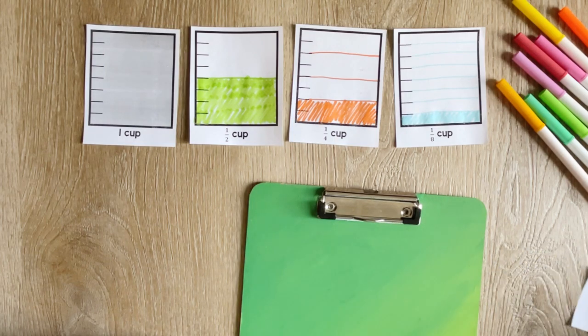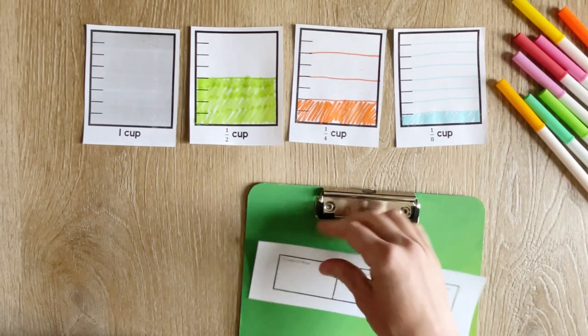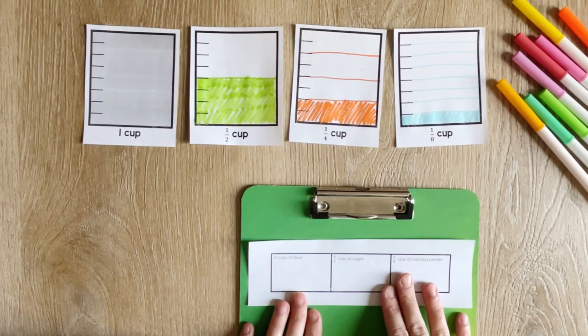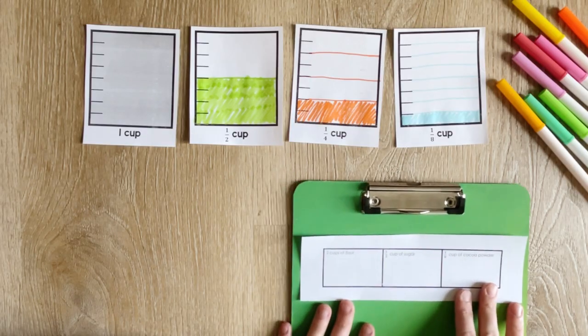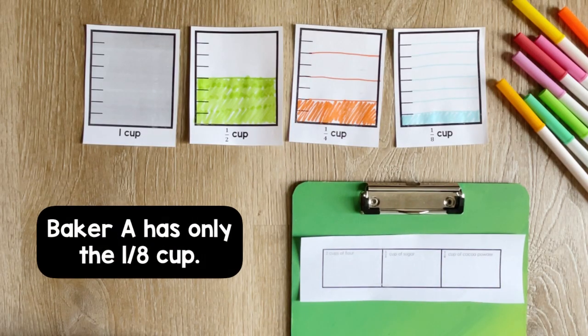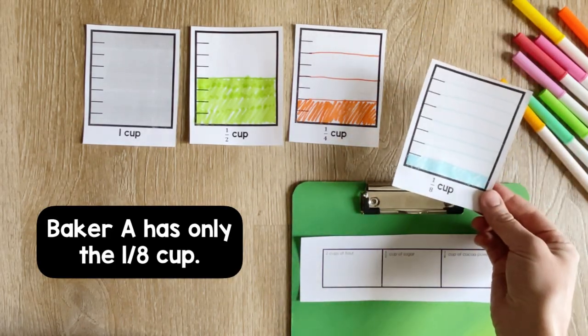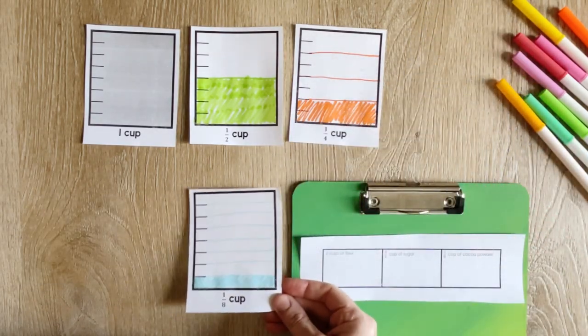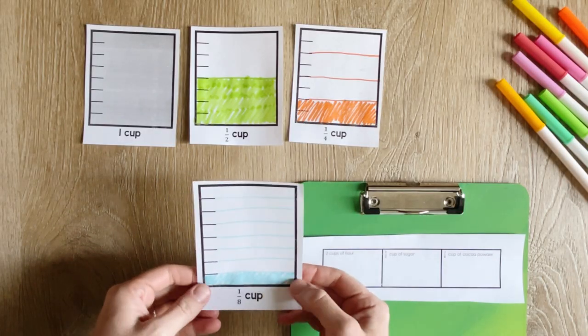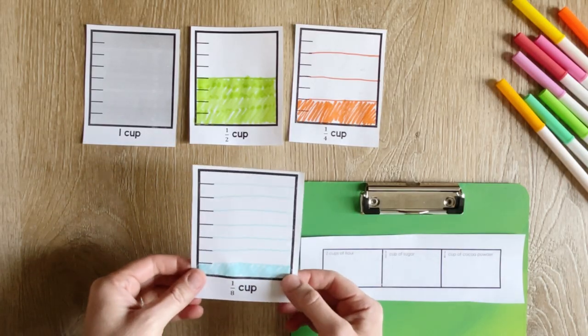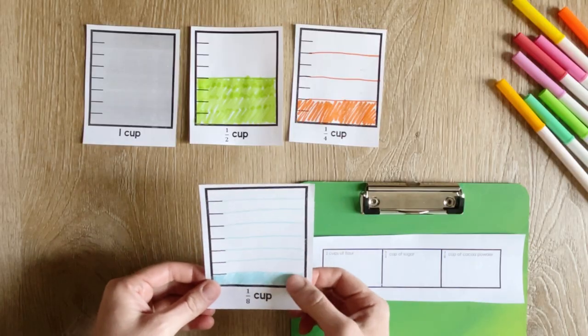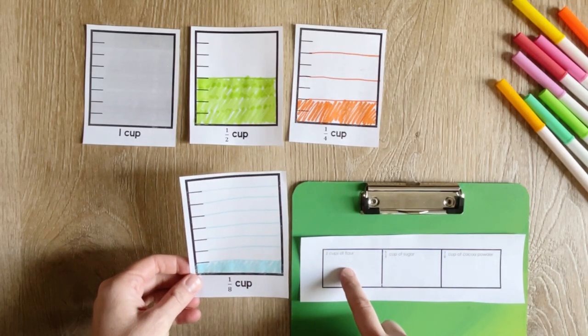I'm going to set these here as a visual reminder of each of the amounts, and then we'll talk about each baker. So baker A only has one-eighth a cup. How can the one-eighth cup be used to measure these different amounts? So here is the amount that this baker can measure in his cup, and so we're going to think about how do we use that to get these different quantities.